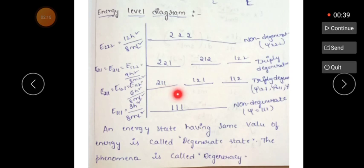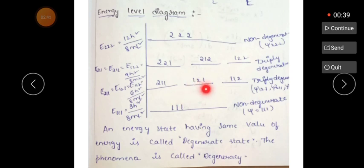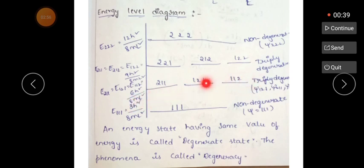For each of these three combinations, nx² + ny² + nz² gives 4 + 1 + 1 = 6. So the energy value is 6h²/8mL² for all three possibilities. Since all three energy levels are the same, this is called triplet degeneracy.